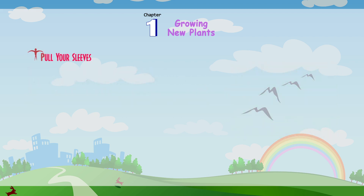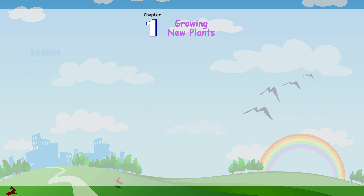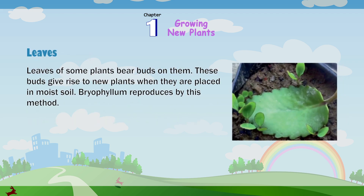Pull up your sleeves. To grow a plant from a stem, cut a small portion of a money plant stem and place it in a bottle filled with water. Keep the bottle in the sunlight. You will observe roots developing from the stem within a week. This shows that the money plant has started growing. Leaves: leaves of some plants bear buds on them. These buds give rise to new plants when they are placed in moist soil. Bryophyllum reproduces by this method.